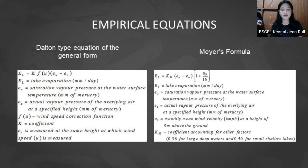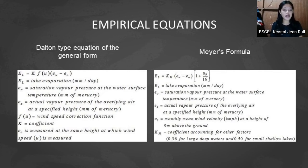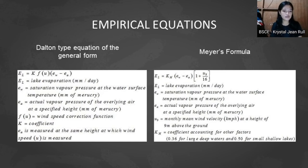Most available empirical equations for estimating lake evaporation follow the Dalton type equation, where lake evaporation equals a coefficient times the wind speed correction function times the quantity of saturation vapor pressure minus actual vapor pressure. In Mayer's formula, lake evaporation equals a coefficient accounting for other factors — 0.36 for large deep waters and 0.5 for small shallow lakes — multiplied by the monthly mean wind velocity in kilometers per hour at a height of 9 meters above the ground.